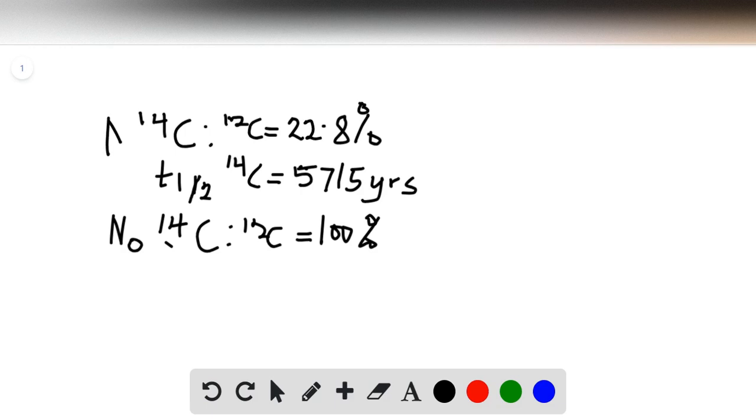We have the half-life, so now all that we have is this data, and we know that using the integrated rate law we can relate what we have with t, which is what we have been asked to find.